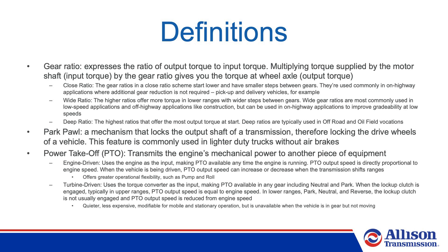Turbine-driven PTO uses the torque converter as the input, making PTO available in any gear, including neutral and park. When the lockup clutch is engaged, typically in upper ranges, PTO output speed is equal to engine speed. In lower ranges, park, neutral, and reverse, the lockup clutch is not usually engaged, and PTO output speed is reduced from engine speed. Turbine-driven PTO offers the advantages of being quieter, less expensive, and more modifiable for mobile and stationary operation than other PTO offerings, but is not available when the vehicle is in gear but not moving.